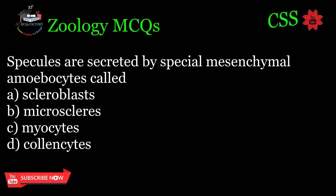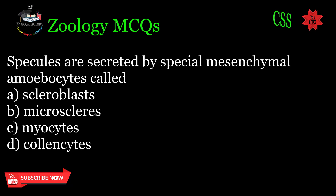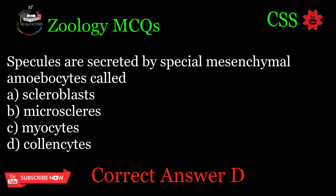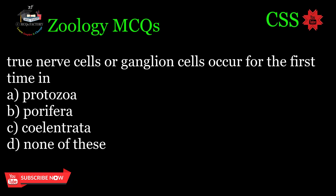Spicules are secreted by special mesenchymal amoebocytes called: A. Scleroblasts, B. Microscleres, C. Myocytes, D. Coelomocytes. Correct answer: D.